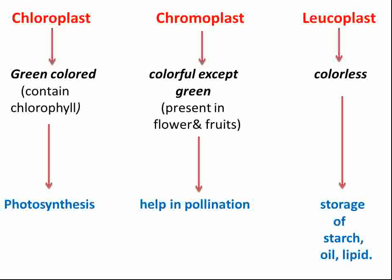The next plastid is chromoplast. Chromo means colorful, so these are colorful plastids — but they do not contain green color. They are found in flowers and fruits, which is why flowers and fruits appear colorful. The function of chromoplasts is to attract insects and help in pollination.